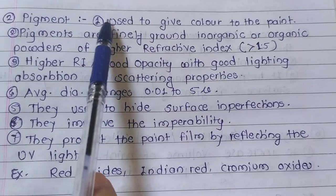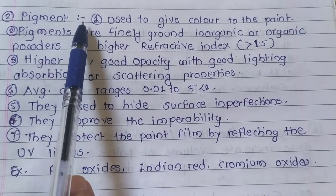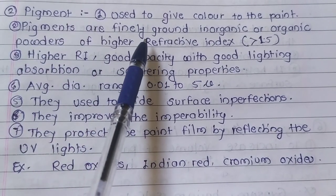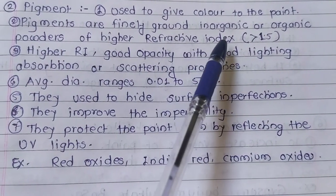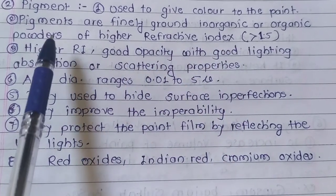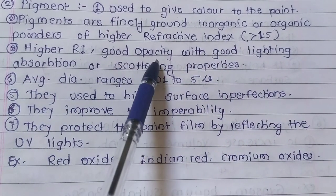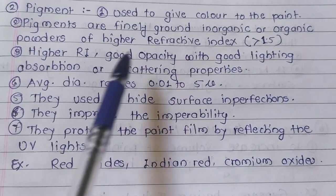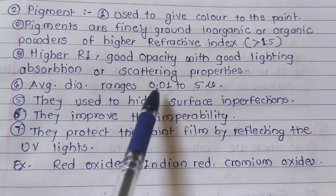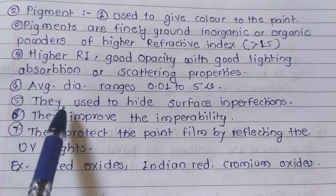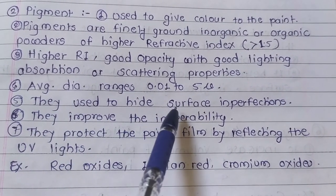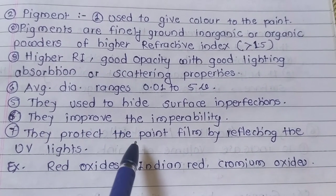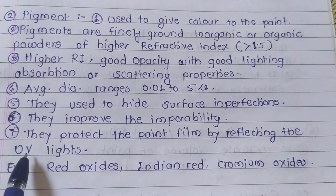Now, pigments. Pigments are used for coloring purpose. Pigments are finely ground inorganic or organic powders of a higher refractive index, which is more than 1.5. They have good capacity with good lighting absorption or scattering properties. Average diameter ranges from 0.0125 microns. They are used to hide surface imperfections, improve impermeability, and protect the paint film by reflecting UV light.